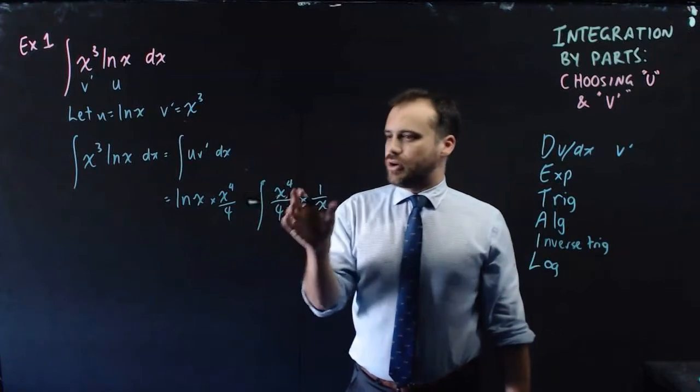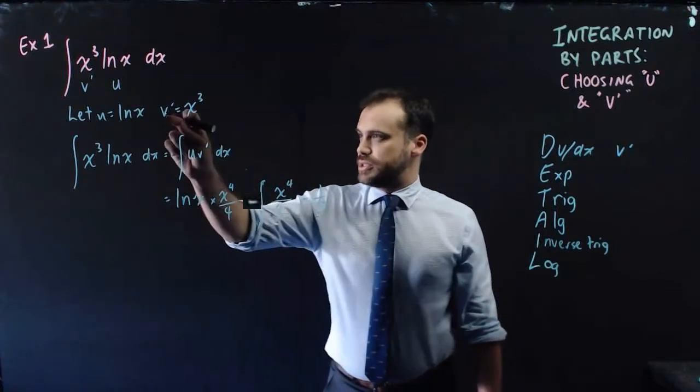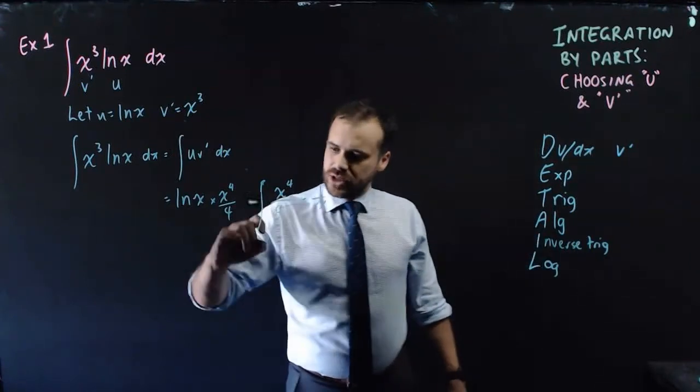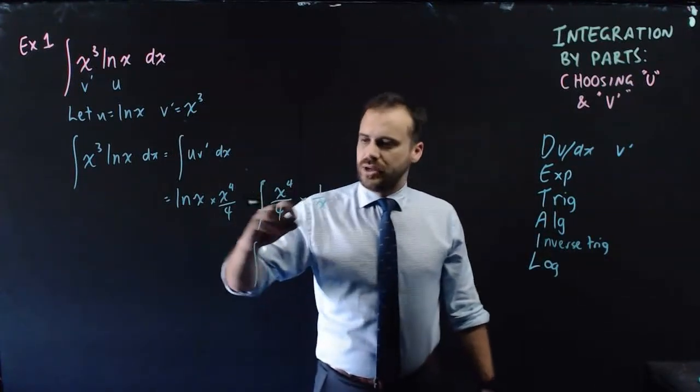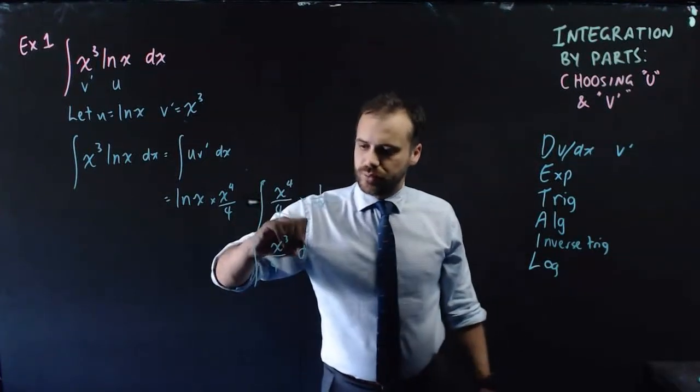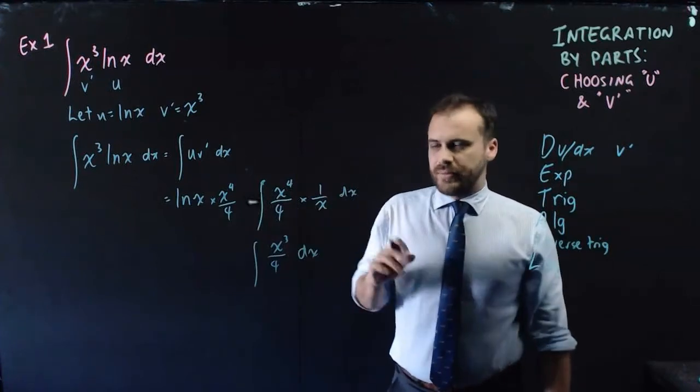and then an integral of v, which is the integral of x cubed, x⁴ over 4, times 1 over x. And this is going to be really easy to integrate, because it's just going to be x cubed over 4, with respect to x. Easy to integrate.